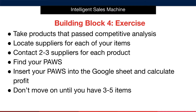Your building block exercise for this module is to take the products that passed our competitive analysis process, locate suppliers for each of your items, and contact two to three suppliers for each product. You need to find the PAWS of each product, insert your PAWS into the Google Sheet, and calculate profitability. Don't move on until you have between three and five items that pass our profitability fundamentals.